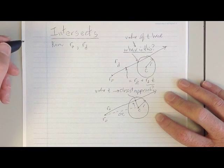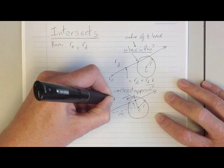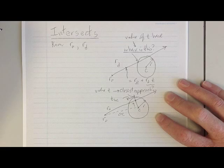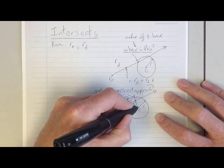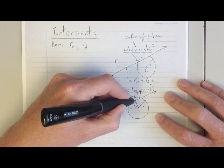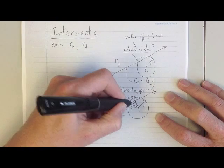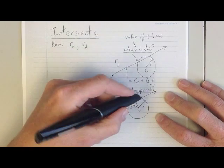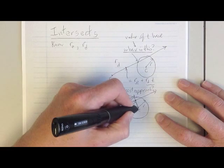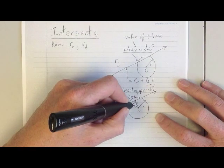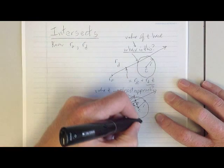To get the value of T at the point of closest approach, we're going to draw a vector which connects the ray origin with the center of the sphere — we'll call that OC. Then we're going to project OC onto the ray direction, which gives us the value of T at the point of closest approach. After that, we figure out the distance from where the ray hits the sphere, if it hits the sphere, to the point of closest approach.